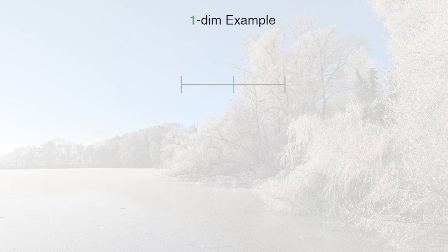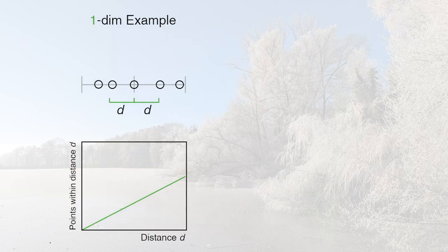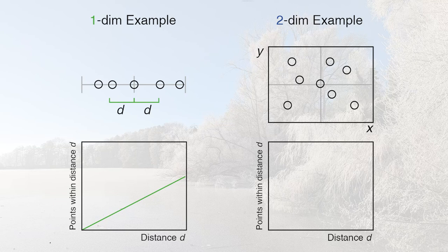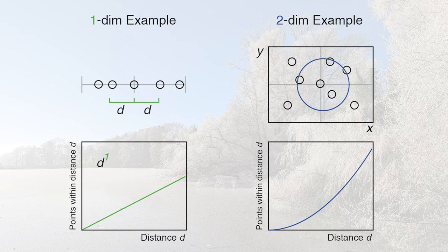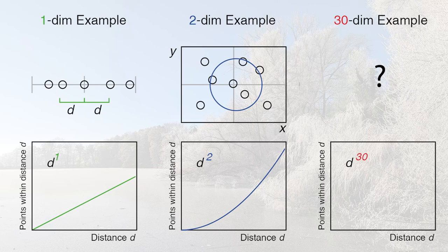To gain some intuition, let's consider an abstract example where we distribute our data points randomly in a one dimensional space, and ask how many data points we expect to find at a certain distance d from the origin. If the points are uniformly distributed, we expect the number of points to be proportional to d. In a two dimensional space, we're asking how many data points we find in a circle of radius d — that number increases quadratically. So in one dimension the expected number increases as d to the one; in two dimensions as d to the two. For a 30 dimensional data space, we expect the number of points up to a distance d to increase like d to the 30.